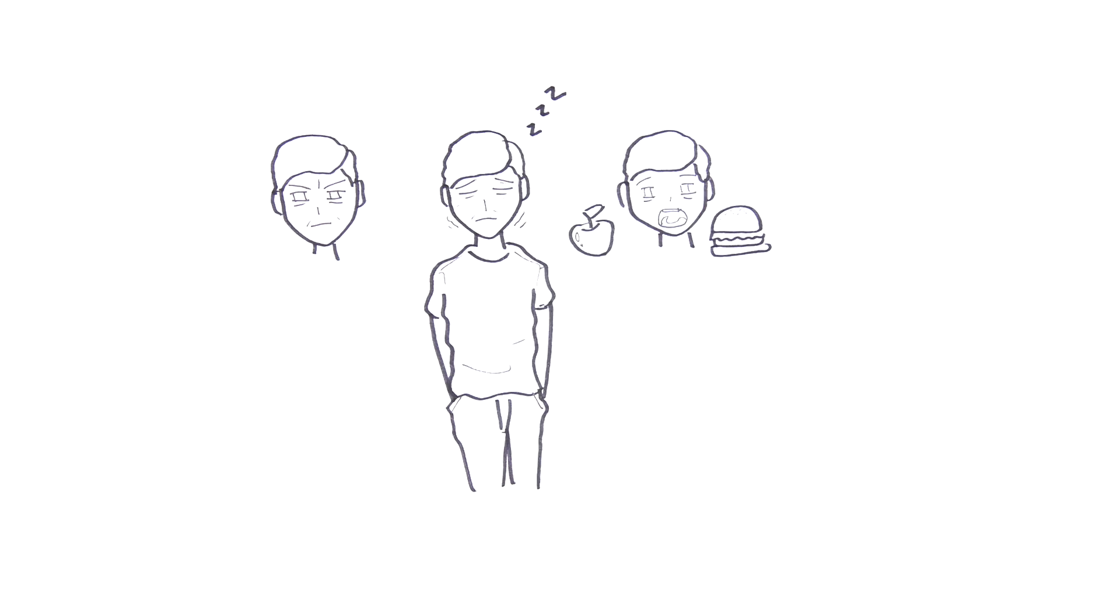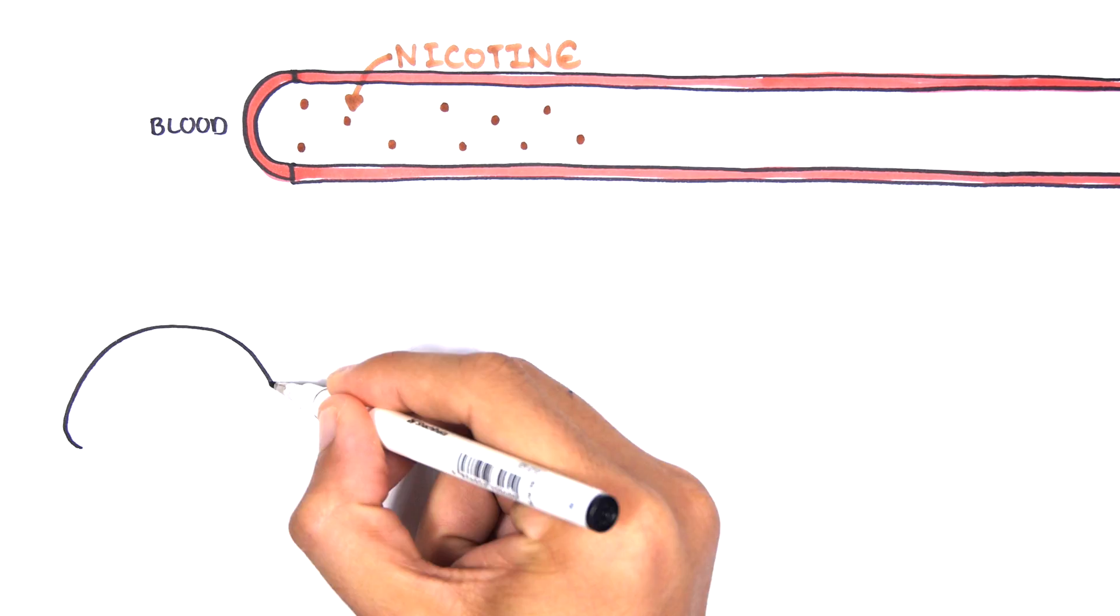Understanding what's happening inside your body can make the journey easier. When you smoke, nicotine travels to your lungs then through the blood and rushes to your brain like an Olympic sprinter.